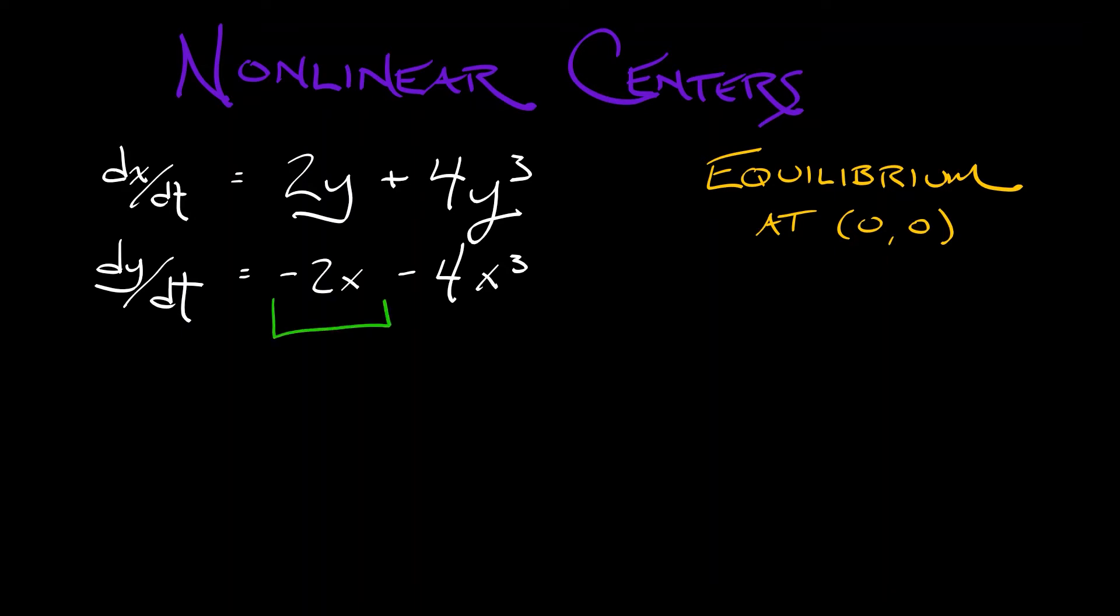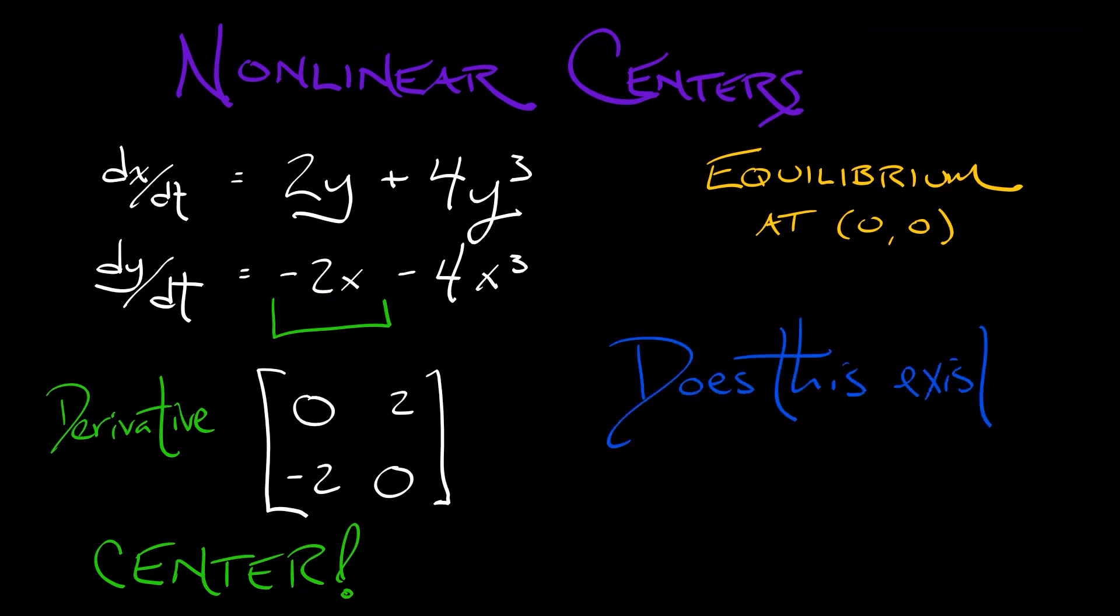The linear part is staring right at you. That means the linearization at the origin is given by 0, 2, -2, 0, and that's a center. But is it? Does this really have a center at the origin or not?